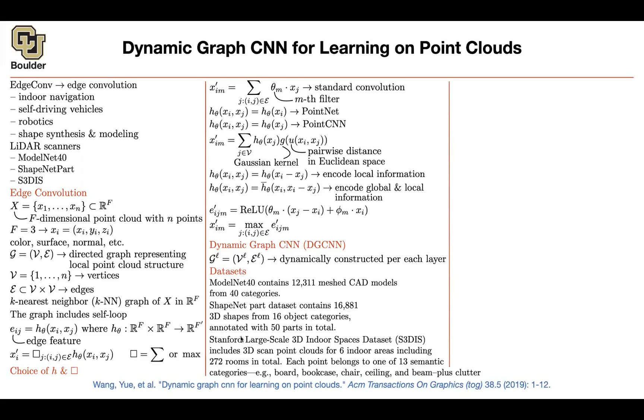Stanford large-scale 3D indoor space dataset as 3DIS. It has 3D scan point clouds of six indoor areas. There are going to be 272 rooms in total. And the semantic categories, there are 13 of them. And they're like board, bookcase, chair, ceiling, beam, and then plus clutter, object stuff.